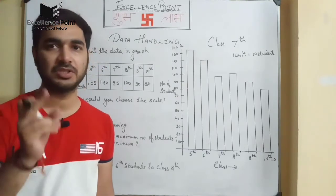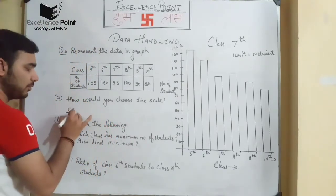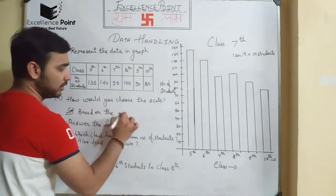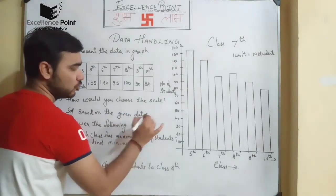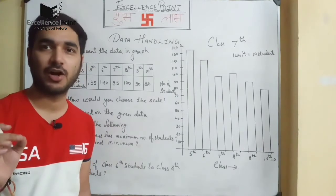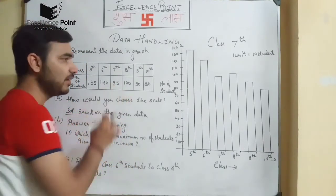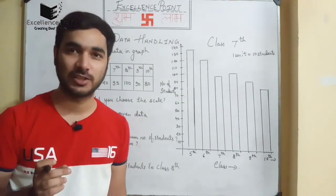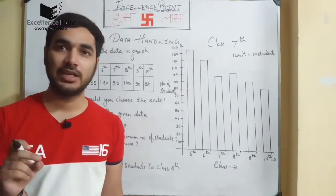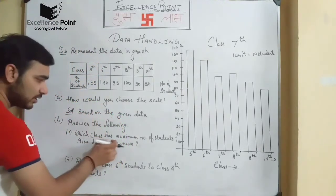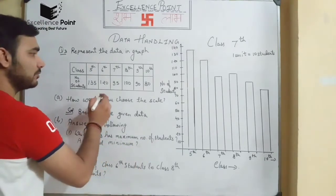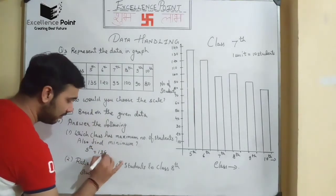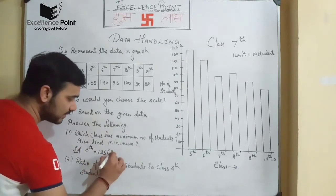Based on the number of observations, we can choose the scale. We can take the scale according to our requirement — we can also take 5 as a scale. In this graph I have chosen 10 as the scale because of space constraints. You can choose the scale according to your requirements. The class with the maximum number of students is Class 5, which has 135 students.